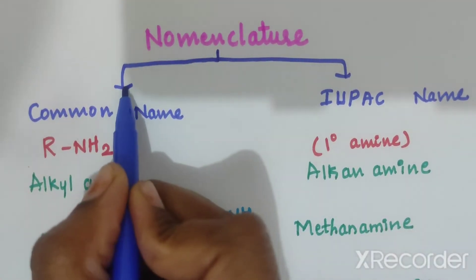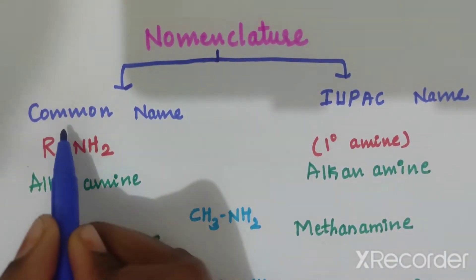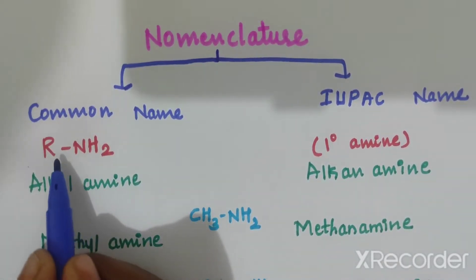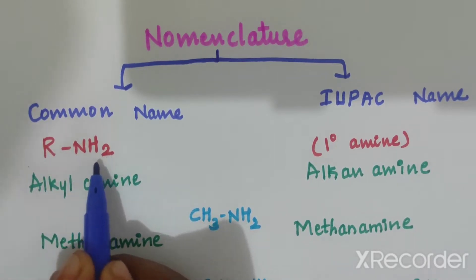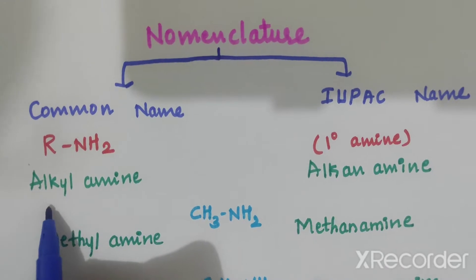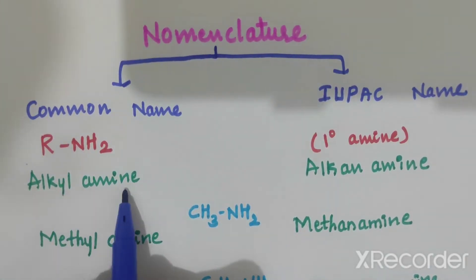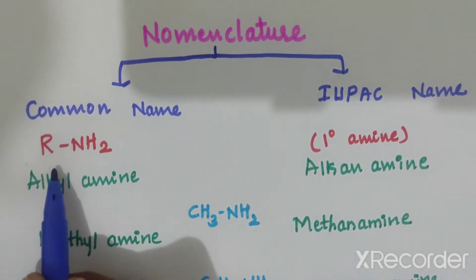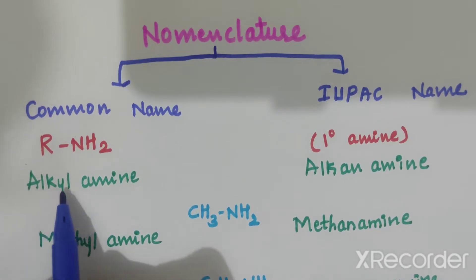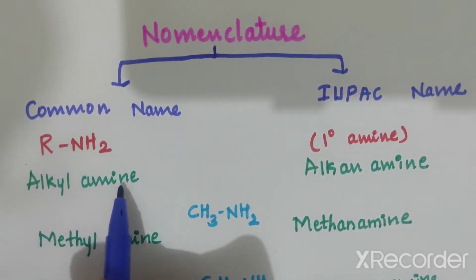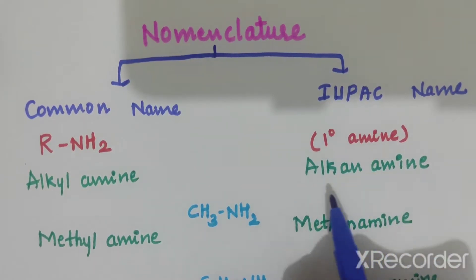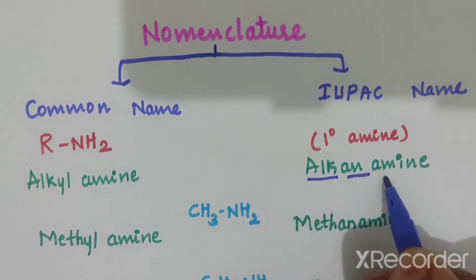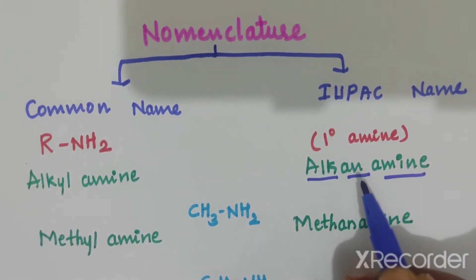First, we will discuss about first degree amines. This is R-NH2, a first degree amine. The common name is alkyl amine — R is the alkyl group, so we can write alkyl NH2 as amine. The IUPAC nomenclature is alkan-amine, and this is for first degree amine.